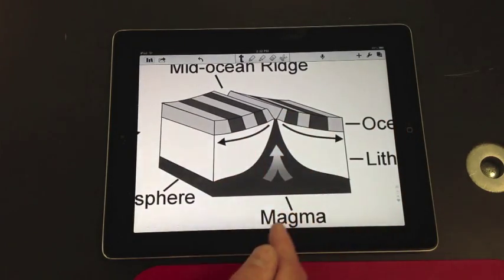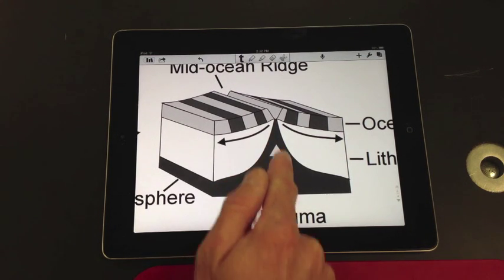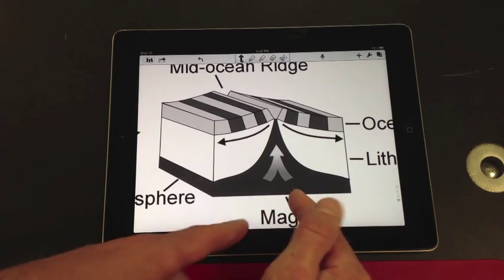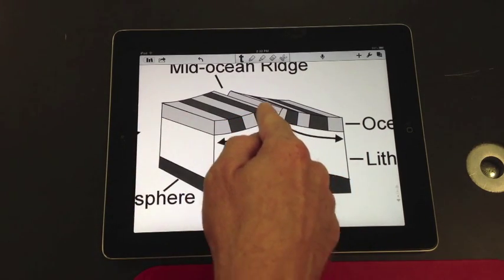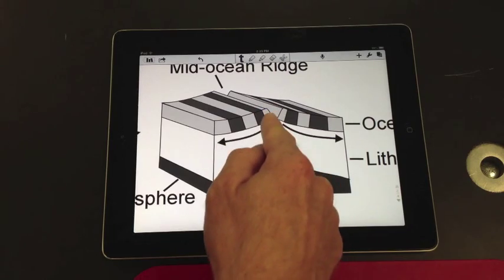Something else you notice in this model, or this picture at least, is that magma is rising up from the inside of the earth, and it is coming up and basically forming new rock right at the mid-ocean ridge.